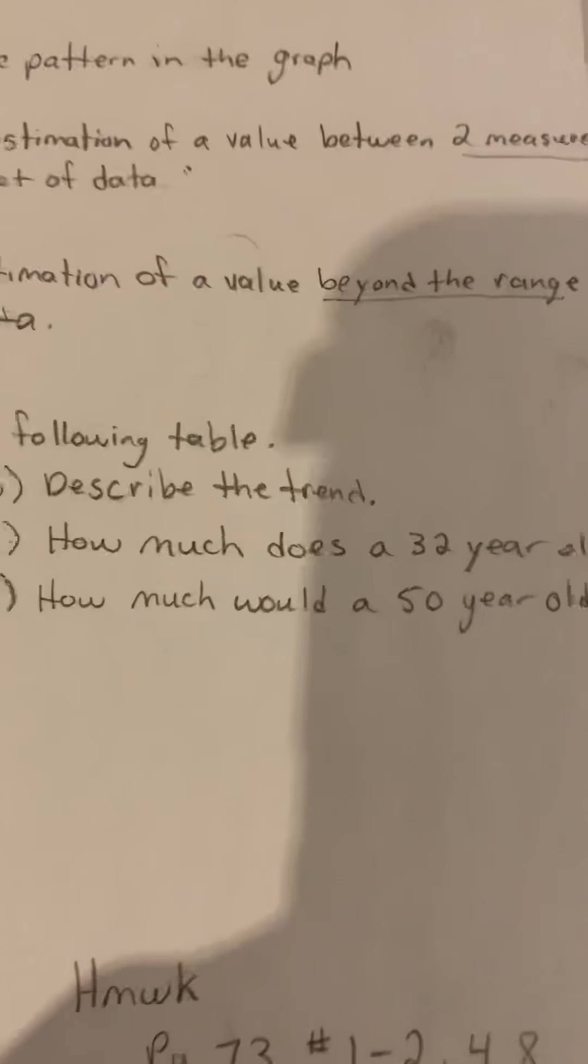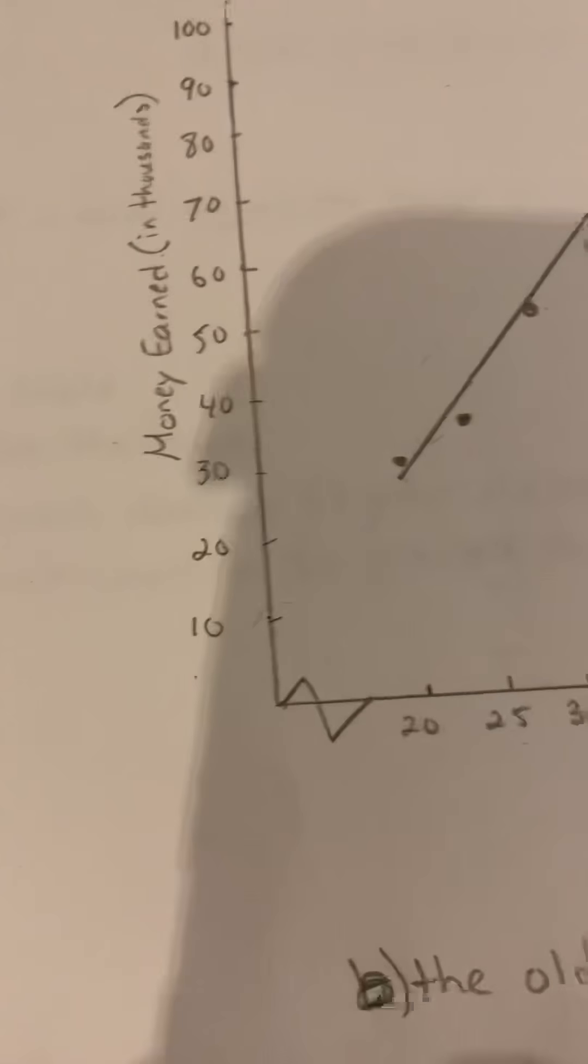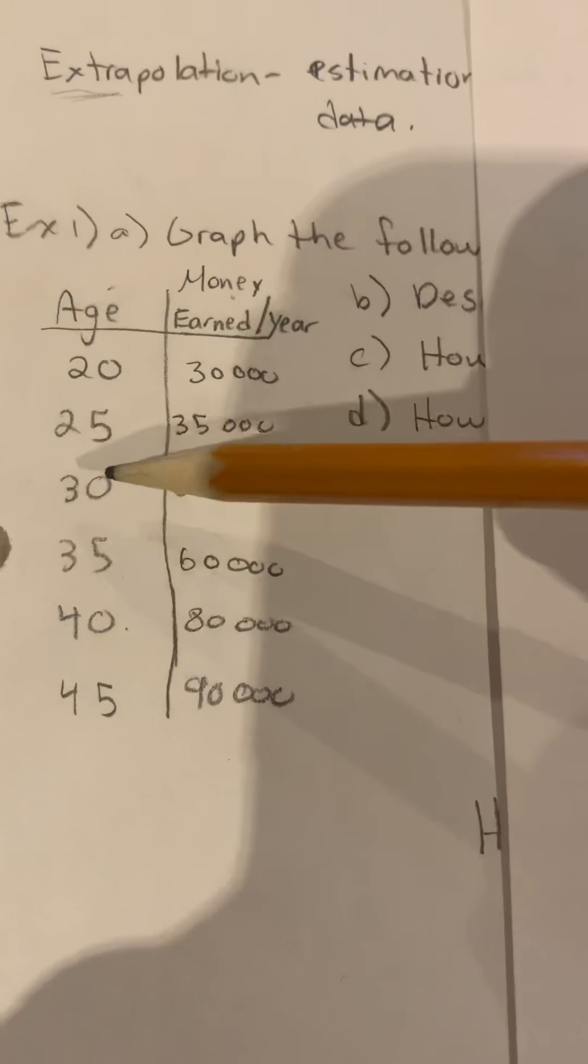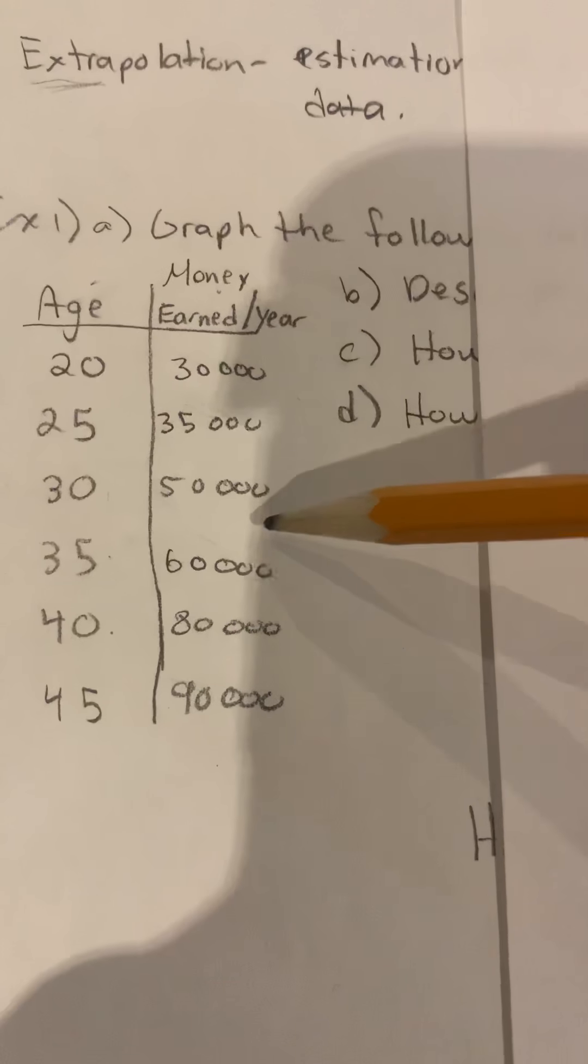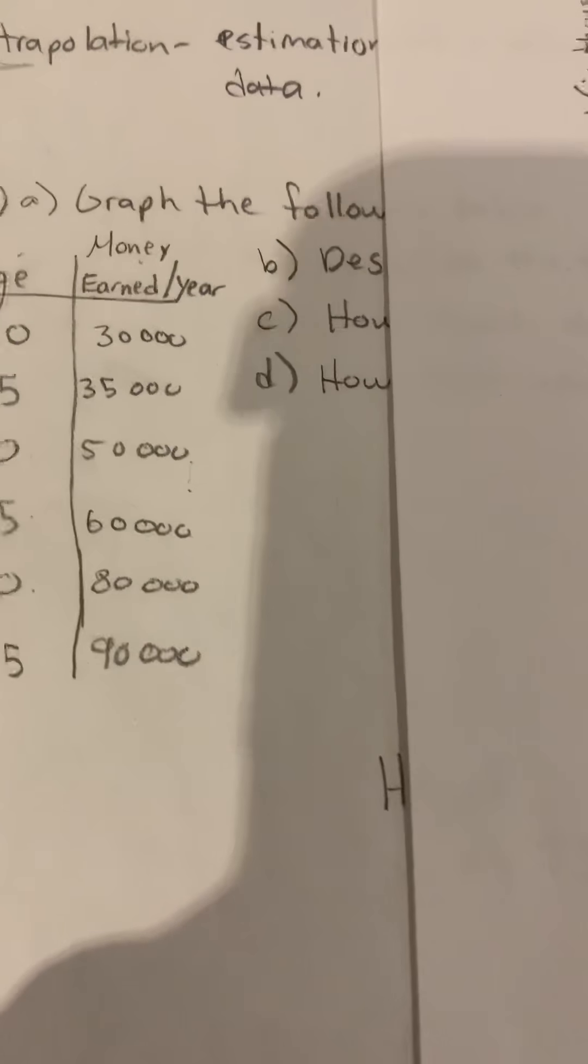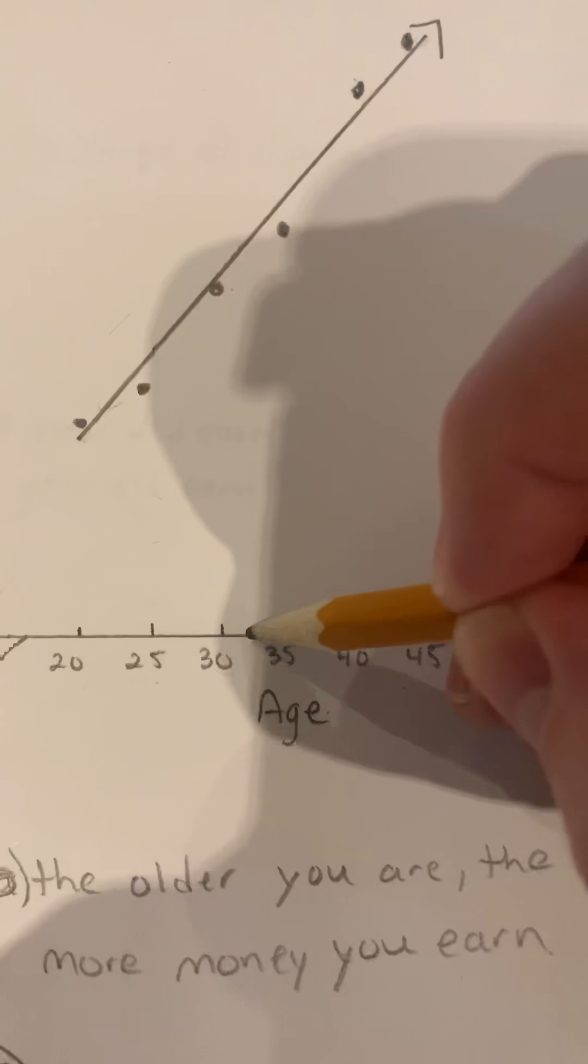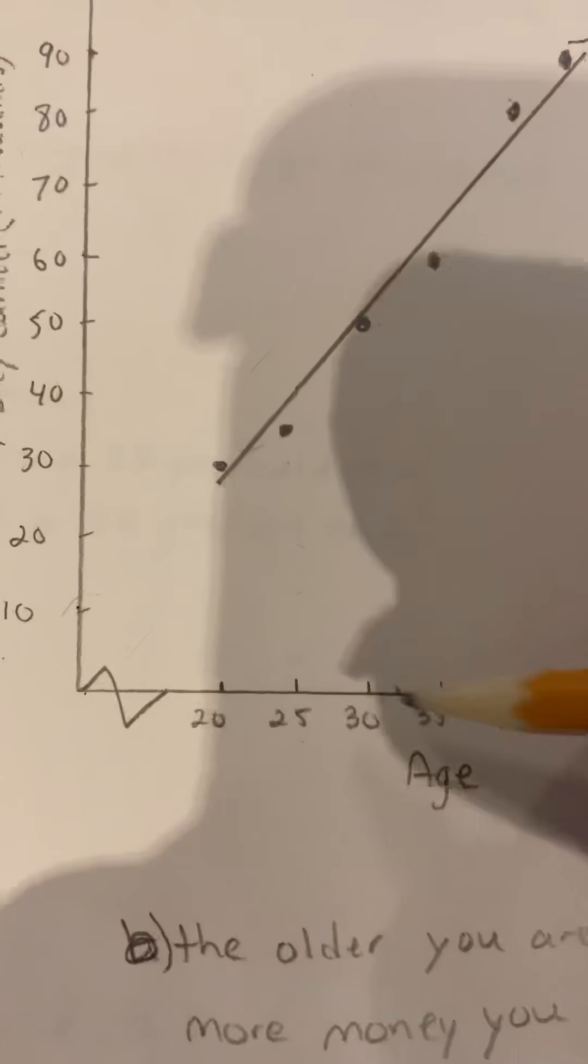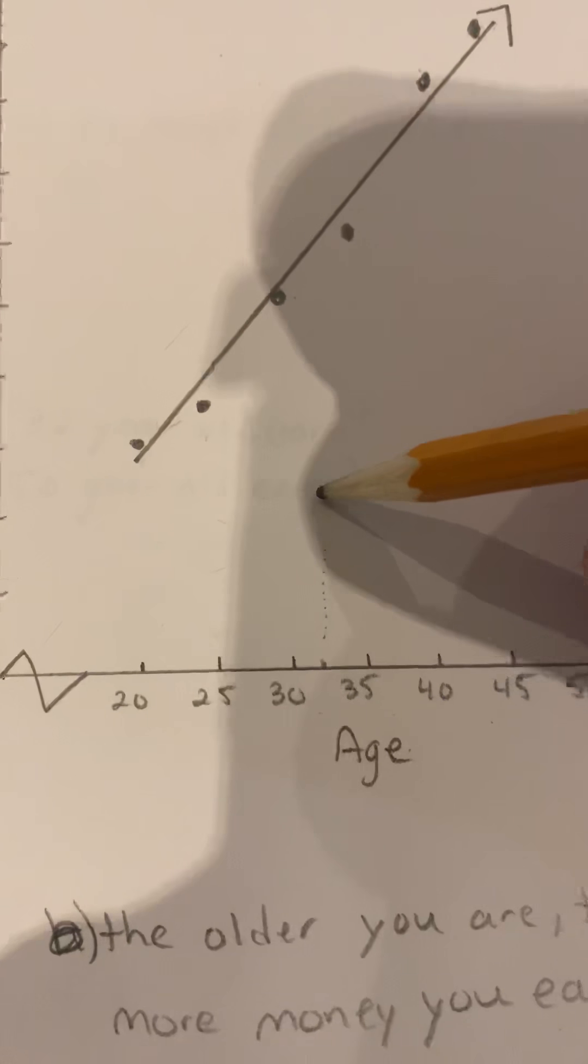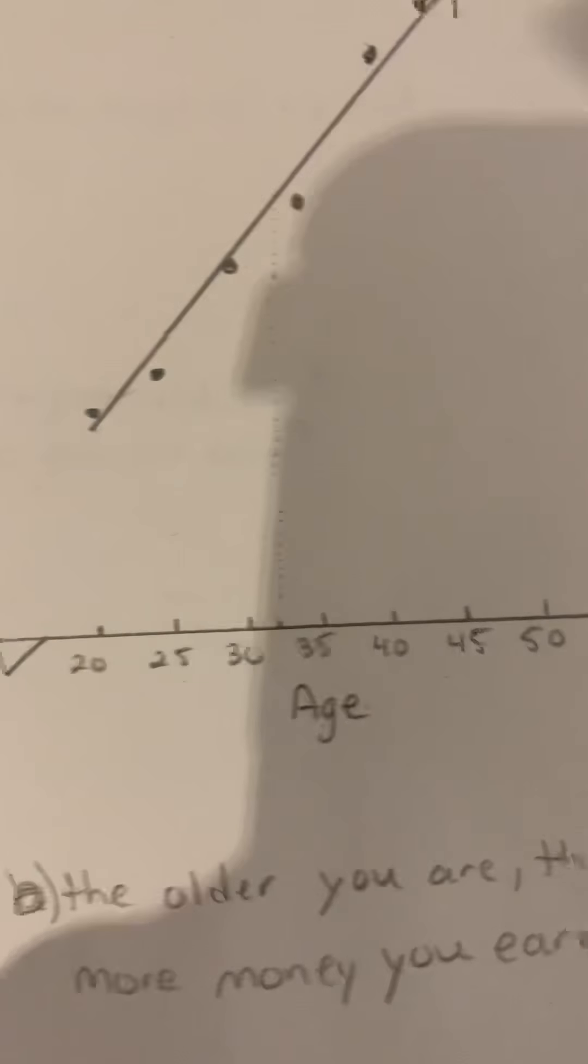Part c says how much does a 32-year-old earn? So you could do two options here but I want you to do one of them. We know that 32 is almost halfway between 30 and 35, so we could estimate it to be halfway which would be about 55,000. But I'd rather you do a different method. I want you to use the graph. Find roughly where 32 years old would be on your graph, not quite half but maybe just a little bit less, and then I want you to draw a dotted line all the way up to the line of best fit. I'm going to grab a ruler and do that.